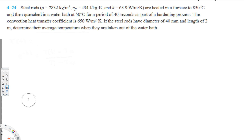Hey, what's going on guys? Let's do this problem. This question is asking: steel rods are heated in a furnace to 850 degrees Celsius and then quenched in a water bath at 50 degrees Celsius for a period of 40 seconds as part of a hardening process. The convection heat transfer coefficient is 650. If the steel rods have a diameter of 4 millimeters and length of 2 meters, determine their average temperature when they are taken out of the water bath. To find this, we can use lumped system analysis.